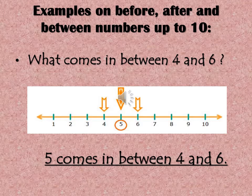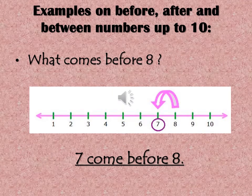So what comes before eight? Let's count: one, two, three, four, five, six, seven, and eight. Let's move backwards. What comes before eight? It's seven. Seven comes before eight.